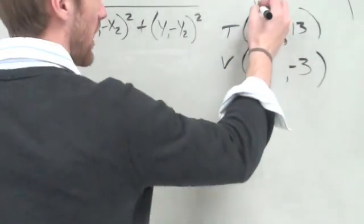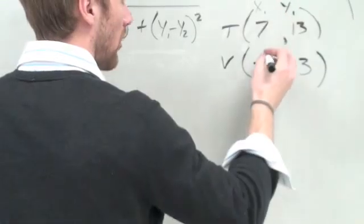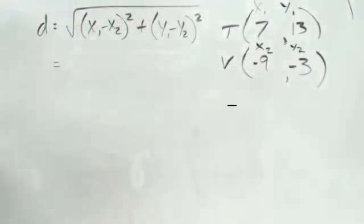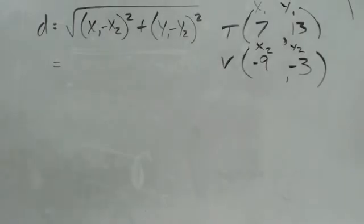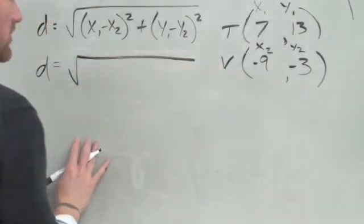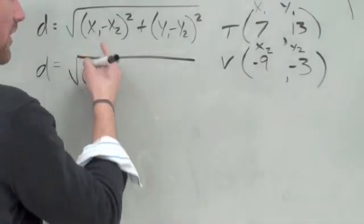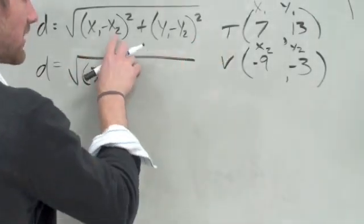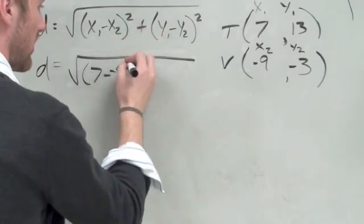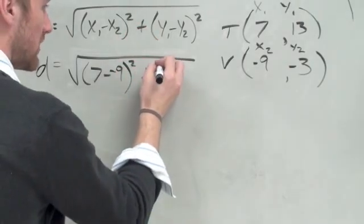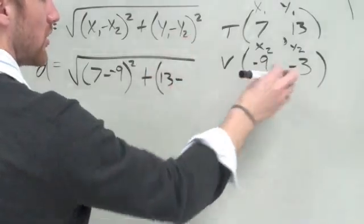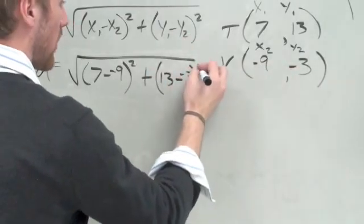So first thing we do is label our stuff. We've got x₁, y₁, x₂, and y₂. In case you noticed earlier, I screwed that up. Okay, so we're finding the distance. We do our square root sign. Parentheses, x₁ is 7 minus x₂ which is -9. Close your parenthesis. Squared. Plus y₁ which is 13 minus y₂ which is -3, squared.